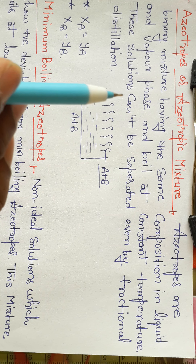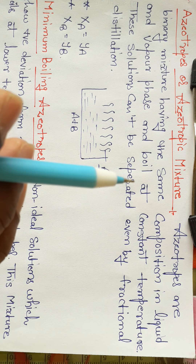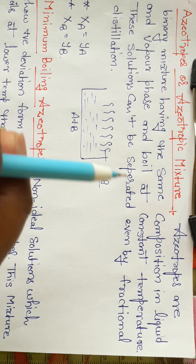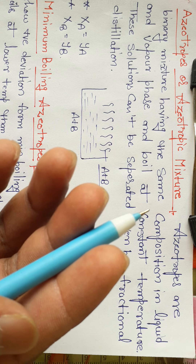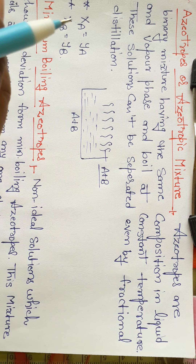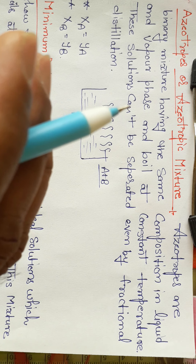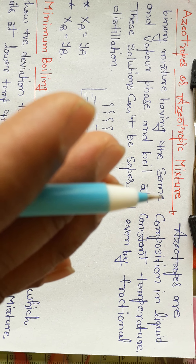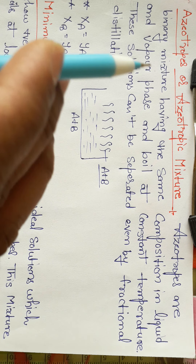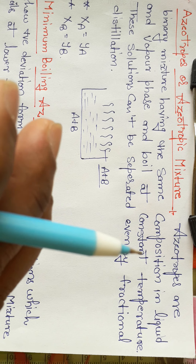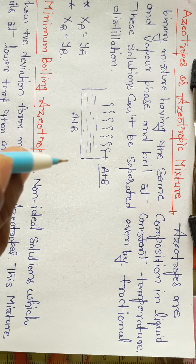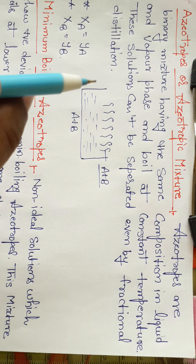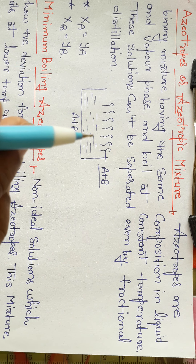These are azeotropic mixtures — binary mixtures where the composition of the liquid phase is the same as the vapor phase, meaning there is no difference between liquid and vapor phase regarding their composition. The boiling point is constant, and we cannot separate them by fractional distillation.